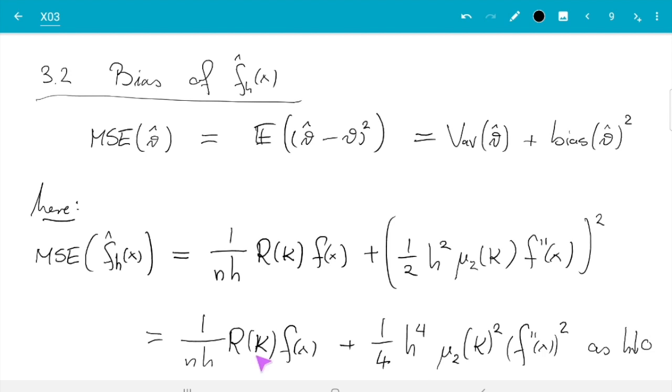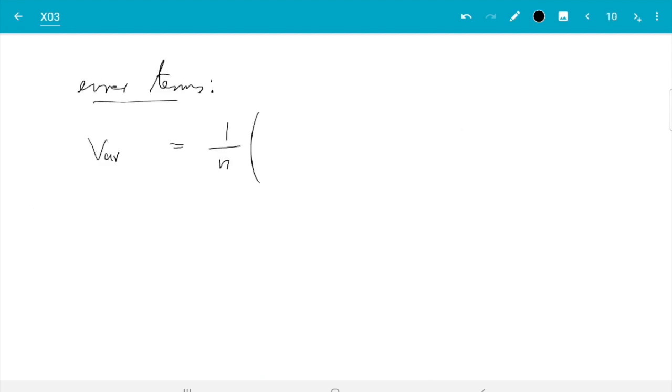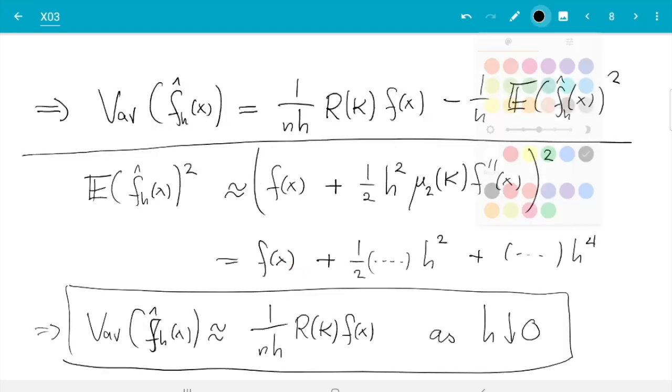Good, so let's look a bit at the error term. For the variance we wrote 1 over n and then we had 1 over h f of x roughness of k minus f of x squared. That's the term I wrote here at the time, I just see I forgot the square.